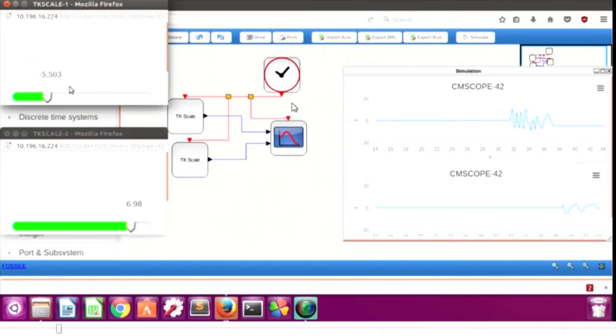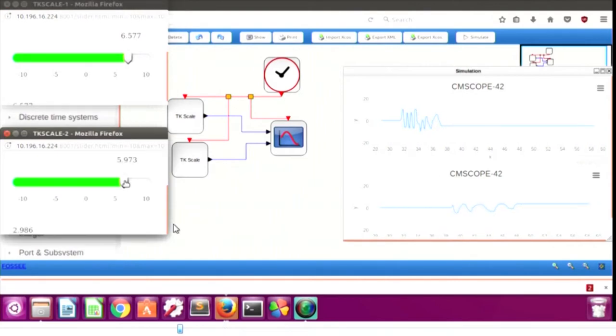We are changing the values. The change in the values in TK scale are reflected in the graph. In the second TK scale the present value is minus 3.8 and the output is minus 1.94 because of the normalization factor.